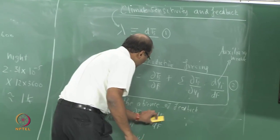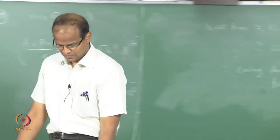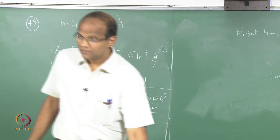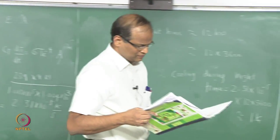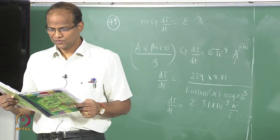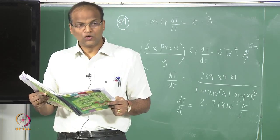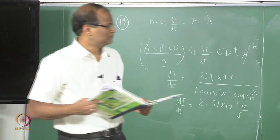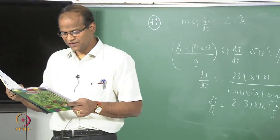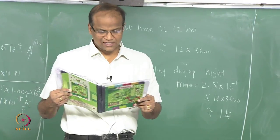We can take DT of the equivalent black body temperature and make that simplification, assuming black body temperature and surface temperature are related. Problem 50: Estimate the sensitivity of the earth's equivalent black body temperature to a change in the solar radiation F_s incident upon the top of the atmosphere.